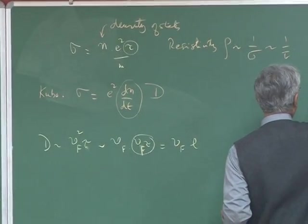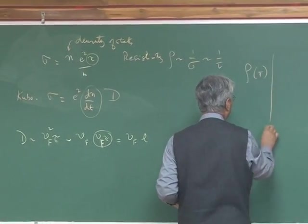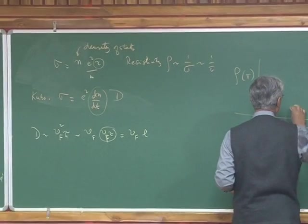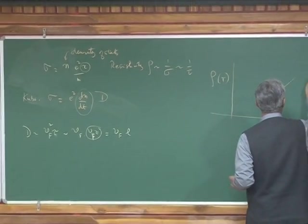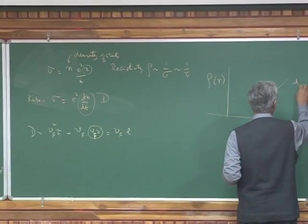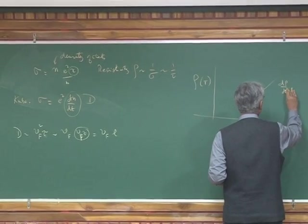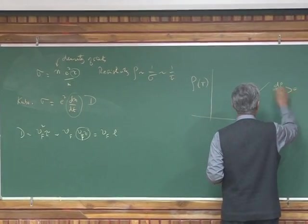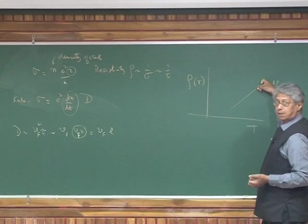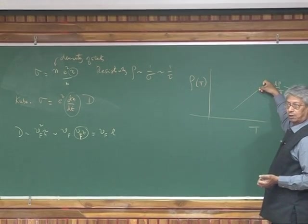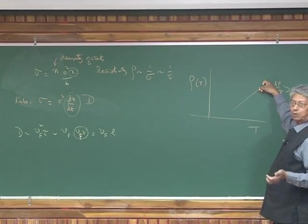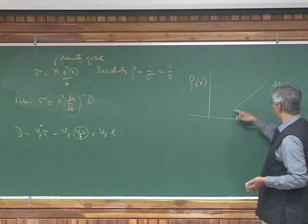You have d rho dt, the slope of this is actually positive. It's like dy dx—the slope is positive. This is a diagram that you always draw, because if you have a superconductor, then at some temperature, resistivity will drop down to zero here, and you have zero-loss transportation.